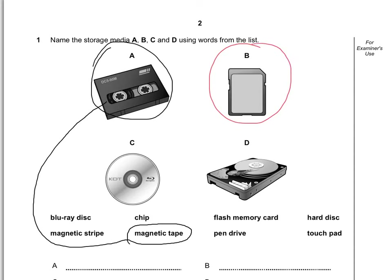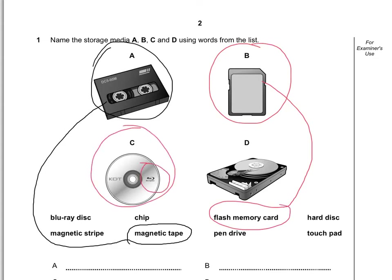This is a flash memory card. Look out for the symbol here — that's obviously the Blu-ray disc. And finally, if you've not ever opened a PC before, the hard drive that is internal would be this one — it's the hard disk.